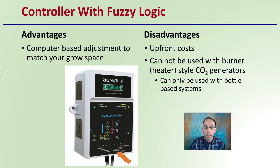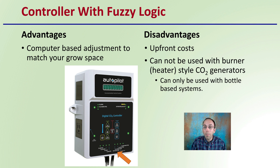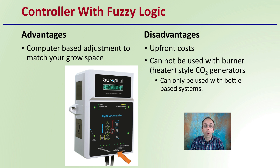The advantage of a controller with fuzzy logic is that it uses computer-based adjustment to match your particular growing space. It's a great way for the controller to learn your grow space and help dial in the carbon dioxide dosing. The disadvantage is it does have the most upfront cost, and it cannot be used with a burner or heater-style carbon dioxide generation — it can only be used with bottle-based systems. However, these computer-based adjustments allow you to minimize wasted carbon dioxide and make your overall CO2 enrichment environment as efficient as possible, especially when using compressed bottles.